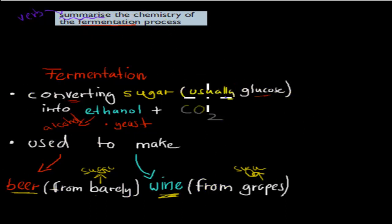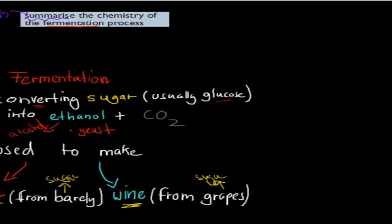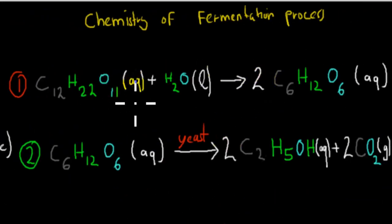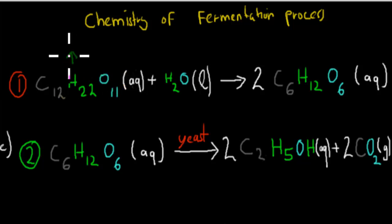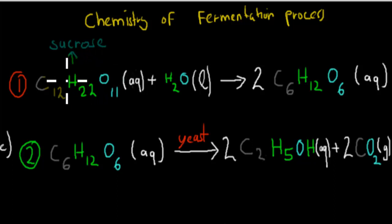Now I'm going to go over the dot point to summarize the chemistry of the fermentation process. Here is the chemistry of the fermentation process and this is the chemical equation. I'm going to go over the word equation as well for each step. So first, one way we can do it is to start with sucrose. We can have maltose or starch as well, but in this case we're going through sucrose. Sucrose is a sugar which has two sugars attached to it — glucose and fructose — so sucrose is like a two-in-one sugar.